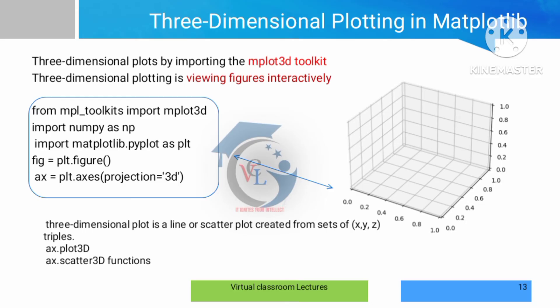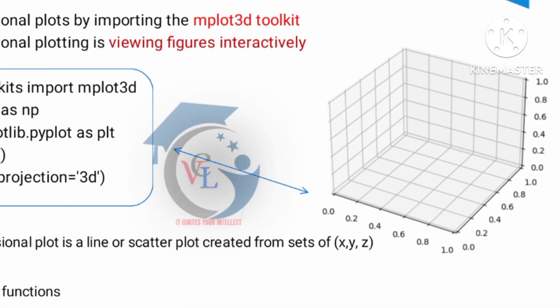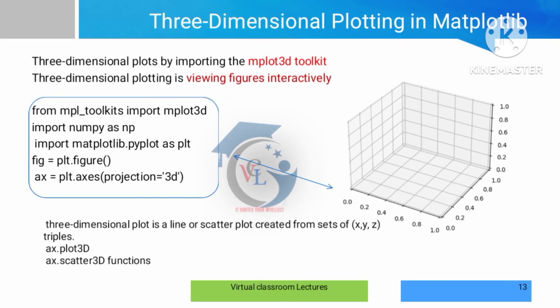For 3D plotting, we need x-axis, y-axis, and z-axis. Compared to a 2D plot which uses only x and y, a 3D plot adds the z-axis. The 3D toolkit is from mpl_toolkits. We import numpy and matplotlib, then import the 3D toolkits. We create a figure using plt.figure(), then set ax = plt.axes(projection='3d').